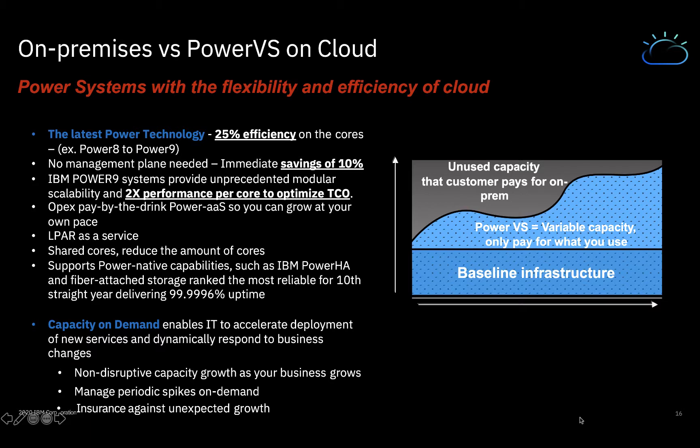You may be asking yourself, why not keep your power environment on-prem? Well, the answer is because you will get more efficiency and flexibility with a cloud environment. You are getting the latest power technology, so you will automatically see efficiency. For example, there is about a 25% efficiency on the cores when you move from a Power8 to Power9 system. This results in cost savings, as you can run more workloads with less compute. In addition to saving on the cores, you can also expect a 10% savings within your environment, as there is no management plane needed with the cloud offering. Additionally, like any cloud service model, it is an OPEX model, where you can pay by the drink, so you can also see cost savings from that standpoint.